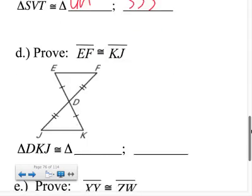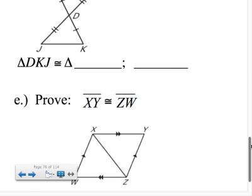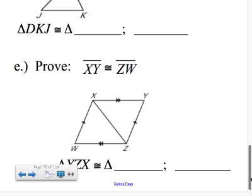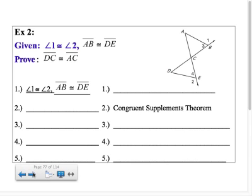I'm not going to beat a dead horse and keep going through all these examples, they're all the same. Long story short, you're going to prove triangles are congruent and then use CPCF.